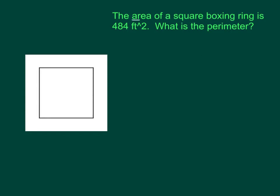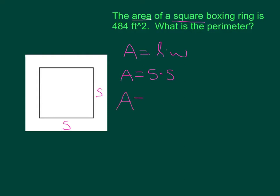We have the area of a square. How do you find the area of a square? Area equals length times width — we have length and width. But what do you know about squares? All squares have the same side length, so instead of length times width, we write side times side. Anytime you multiply a number by itself, it means that number squared.